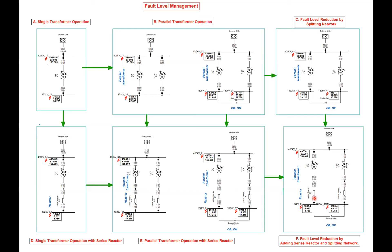So either by splitting the network or by adding a reactor in series, the fault current can be reduced. For example, comparing the 12 kiloamp benchmark: by splitting the network and adding a series reactor, the fault current is reduced substantially from 12 kiloamps to 6. Similarly, with parallel transformers it was 23, reduced to 12 by splitting, and then to 6 with a single reactor. Or using a single transformer, from 12 kiloamps to 6 kiloamps by adding a single reactor.